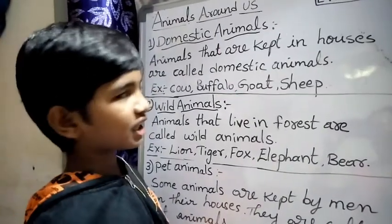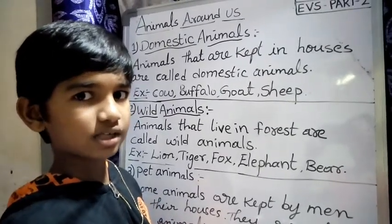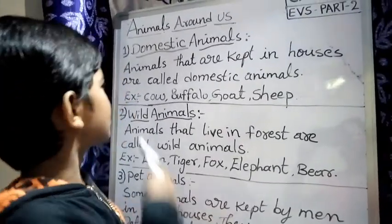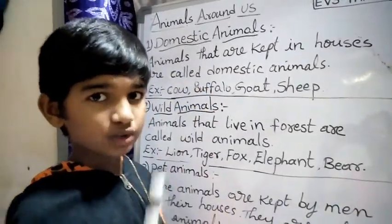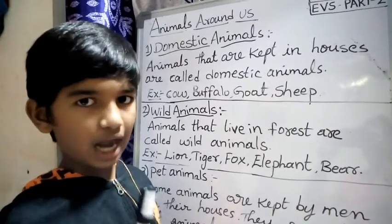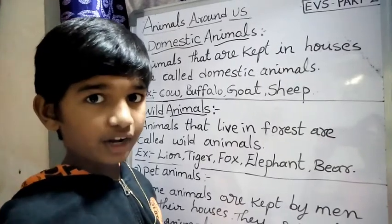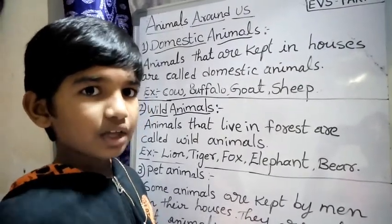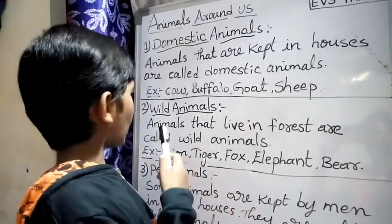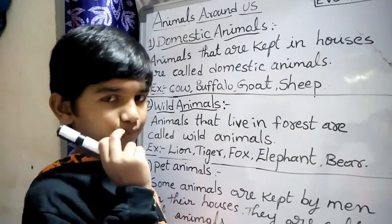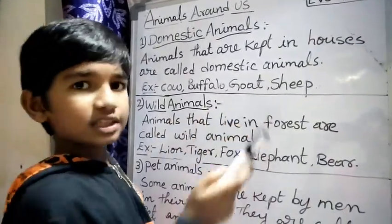Okay friends, I am recalling once. What are the differences between wild animals and domestic animals? Animals that are kept in houses are called domestic animals; animals that live in forest are called wild animals. Examples of domestic animals: cow, buffalo, goat, sheep.